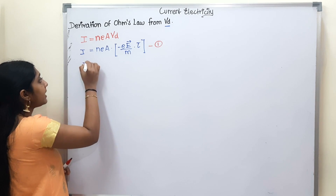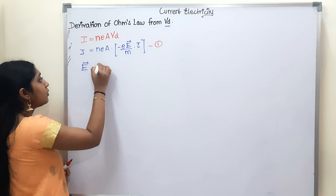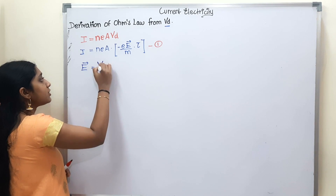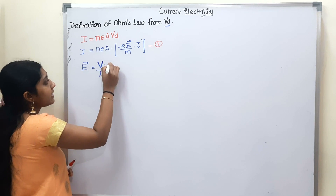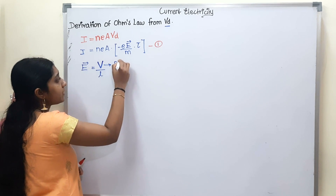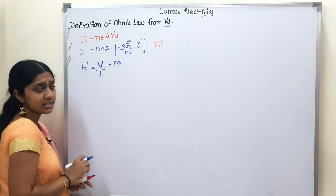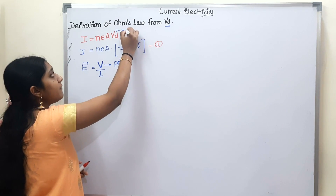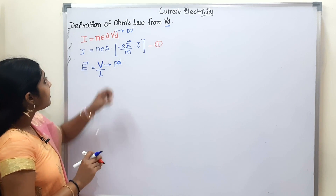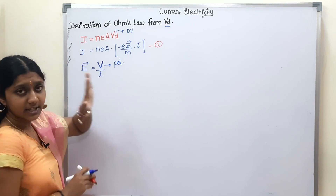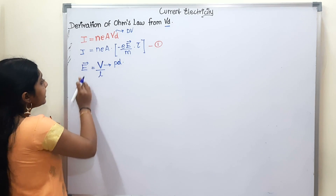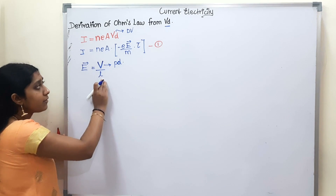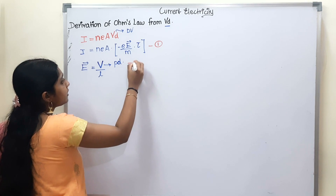Second, the electric field formula. The electric field E is equal to V divided by L, where V is the potential difference (capital V) and L is the length. Note: Vd means drift velocity — do not confuse it with the potential difference V. The electric field equals potential difference divided by length. This is equation number 2.